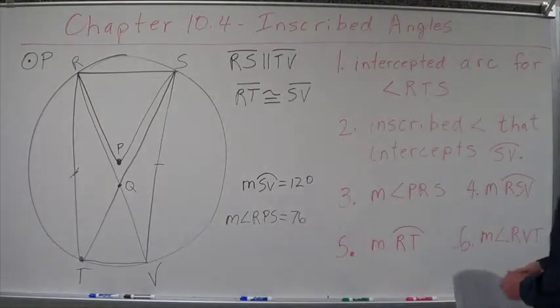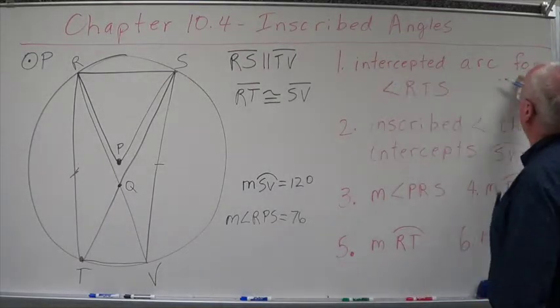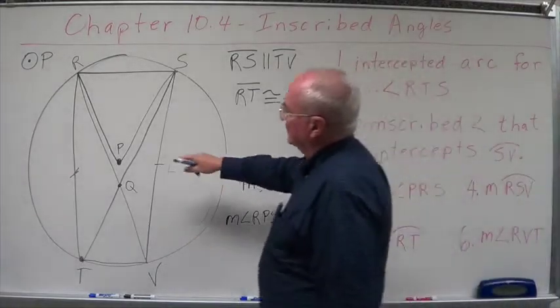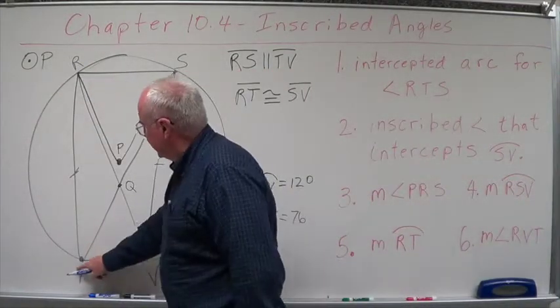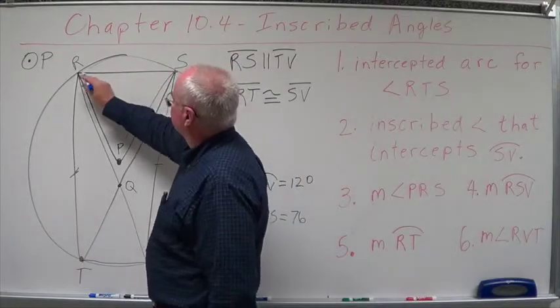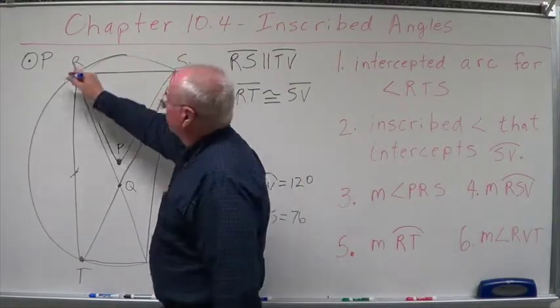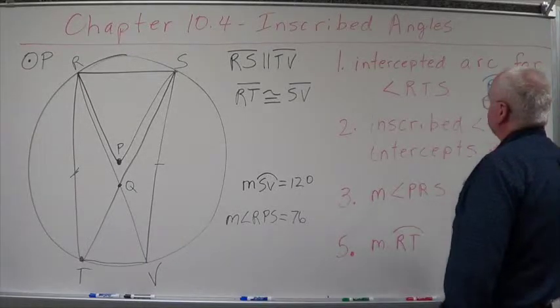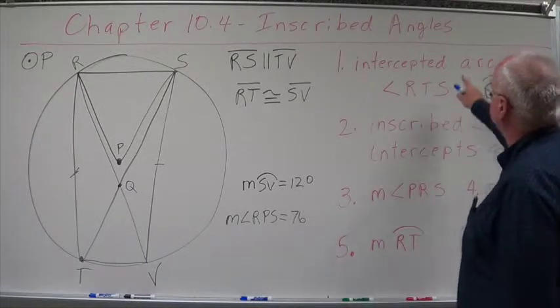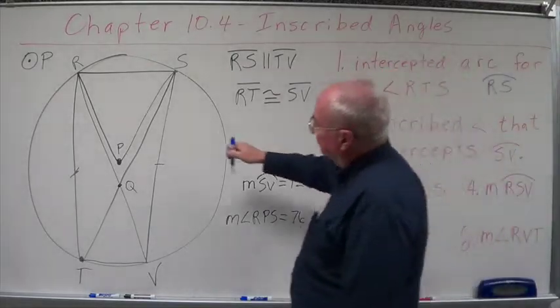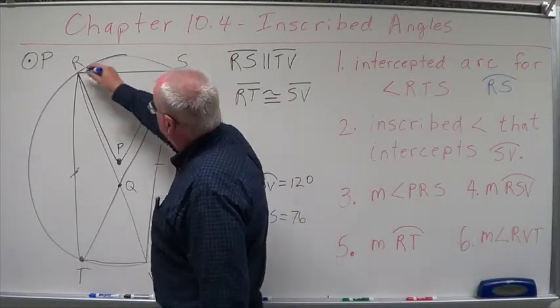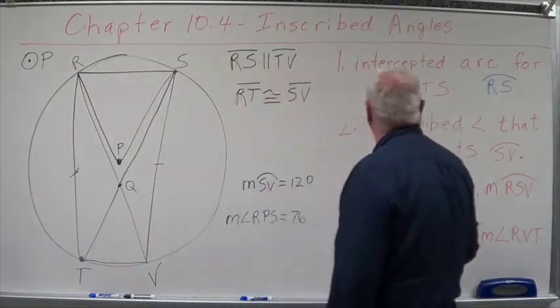First of all, let's find out what is the intercepted arc for angle RTS. So we've got RTS intercepts this arc right here. So that's just going to be arc RS. Pretty simple. The intercepted arc for angle RTS. We start at R, we go to T, we come to S, it ends at RS, so that is the arc that it creates, or intercepts.